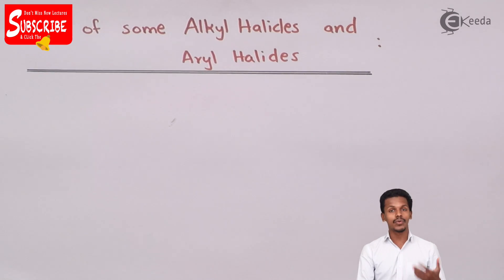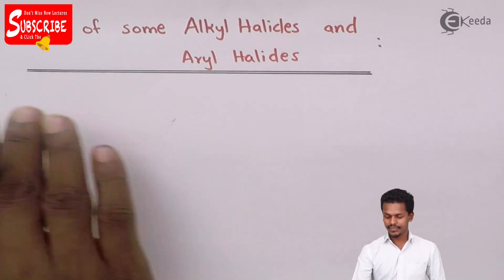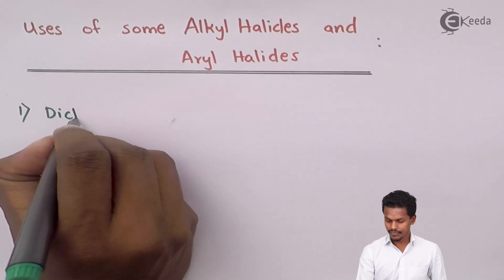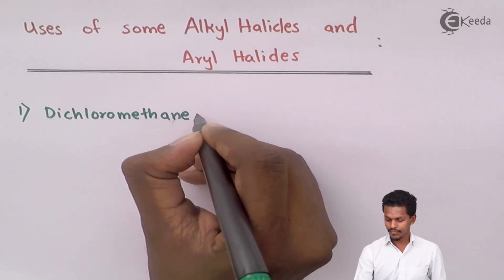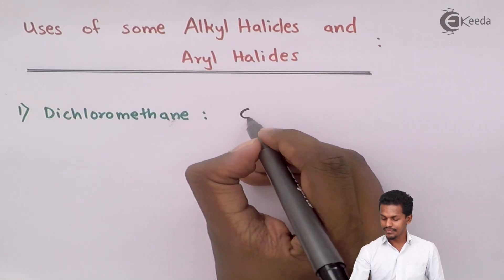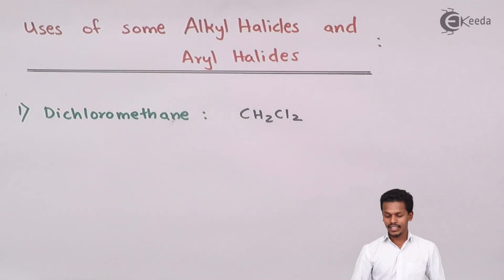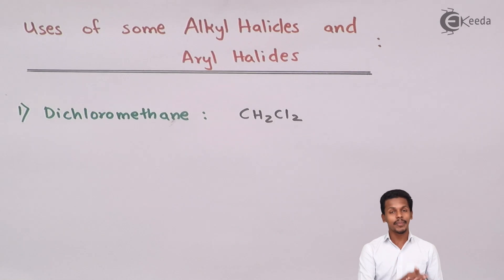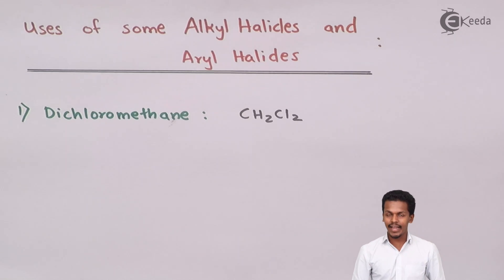Let us start with the first compound, that is Dichloromethane, which can also be written as CH₂Cl₂. This compound is synthesized by the halogenation of methane, which we covered during the preparation of alkyl halides. Now let us talk about the uses of this compound.